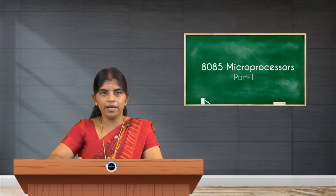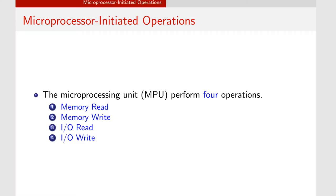Coming to the first part, microprocessor-initiated operations: there are four different operations. The first one is memory read, which is used to read data stored in memory. Next is memory write, which is writing data into memory or saving some data into memory. Then comes I/O read, which is reading or taking in the input data, and I/O write, which is sending some data to the output device. All these are initiated by the microprocessor, which is why they come under microprocessor-initiated operations.